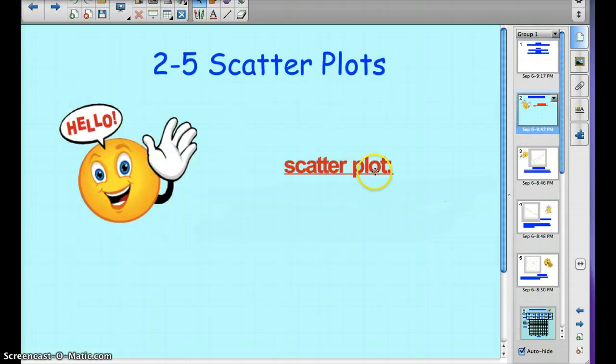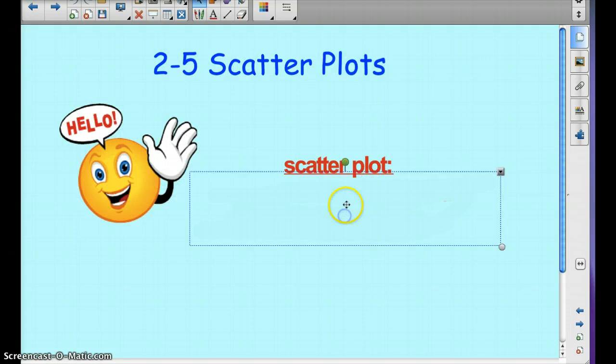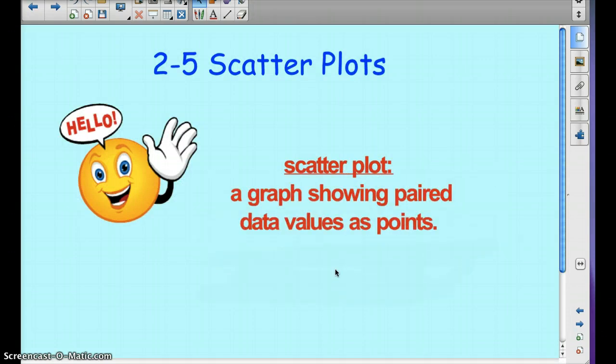So, scatter plots. A scatter plot is a graph showing paired data values as points. We have paired data values, we're going to plot them on a graph, and it'll show a scatter plot.